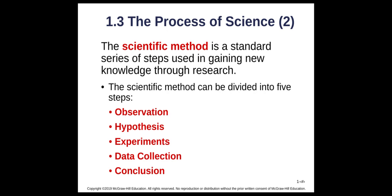The scientific method is a series of steps used to gain scientific knowledge. We can break them down into five steps: observation, hypothesis, experiment, collecting data, and drawing conclusions. Observation is using your senses to gather information about a phenomenon. A hypothesis is your predicted, educated guess as to why something is the way it is. You design and do an experiment to test your hypothesis, collect data, and then draw conclusions.